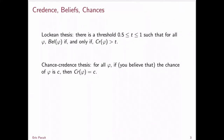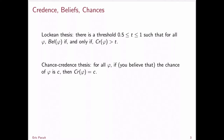The Lockean thesis is a bridge principle that connects your full beliefs and your credences. It says there is a threshold T between 0.5 and 1 such that for all phi, you believe phi if and only if your credence in phi is above that threshold. For example, if your threshold is 0.75, then you would believe any proposition to which you assign a credence greater than 75%.